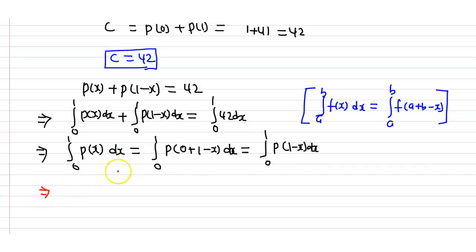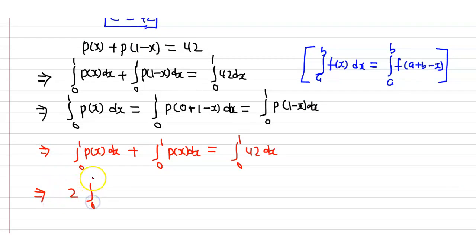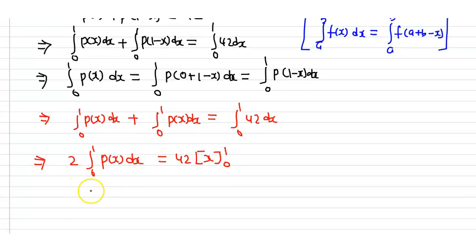So from here, the integral from 0 to 1 of p(x) dx plus the integral from 0 to 1 of p(x) dx equals the integral from 0 to 1 of 42 dx. That implies 2 times the integral from 0 to 1 of p(x) dx equals 42 times x evaluated from 0 to 1. Therefore the integral from 0 to 1 of p(x) dx equals 42 divided by 2, which is 1 minus 0, equal to 21.